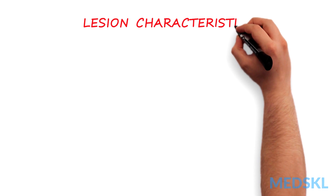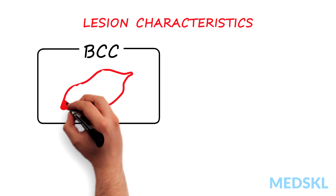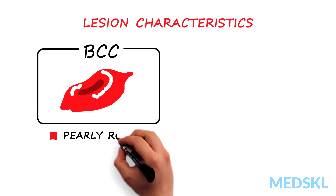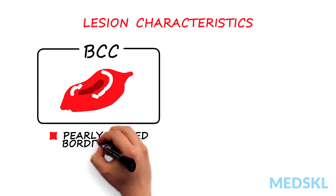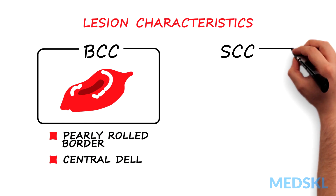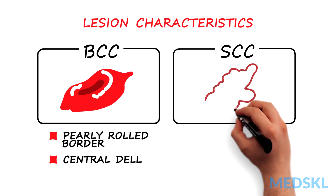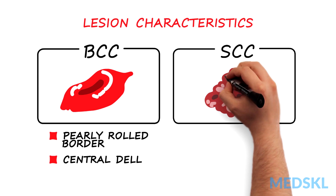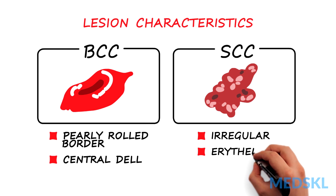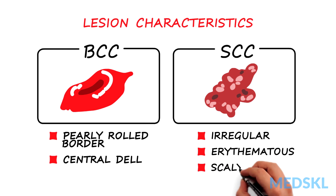Basal cell carcinomas tend to be erythematous papules with pearly rolled borders and central dell or ulceration. Squamous cell carcinomas tend to be irregular erythematous scaly plaques.